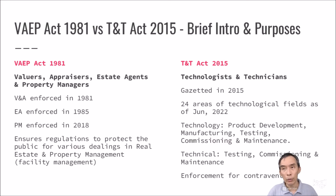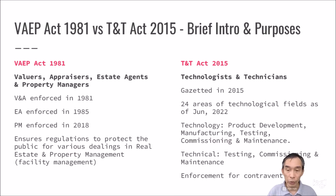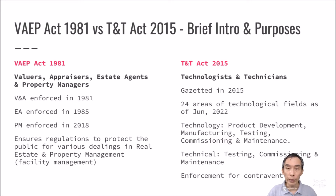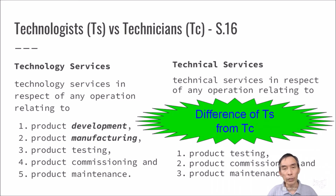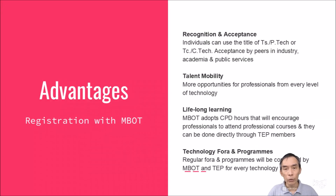There is still no framework regulating who should be involved in technology jobs or who is illegally involved. For example, car mechanics may be self-learned and never attended proper training school but are very skilled. This type of skill-based job does not yet have regulation, allowing the public free choice. The difference between technical and technology services is that technologists are broader, involving research and development, product manufacturing, testing, commissioning, and maintenance, while technicians focus on testing, commissioning, and maintenance.